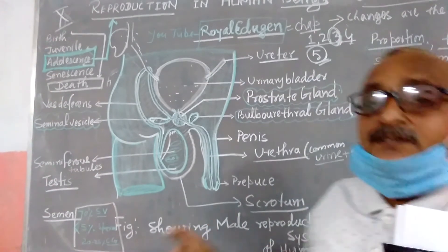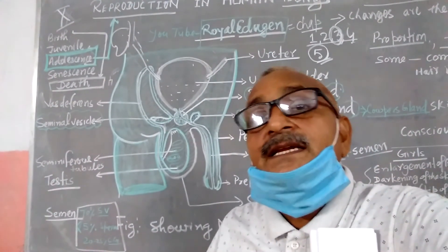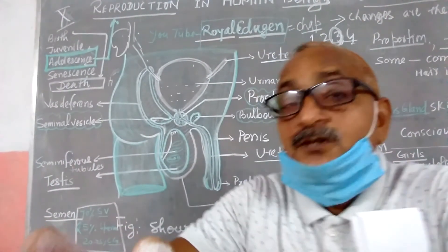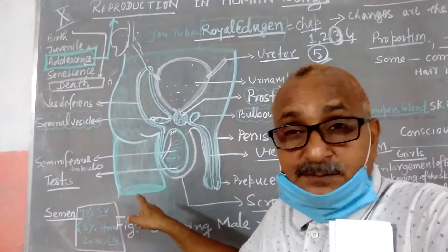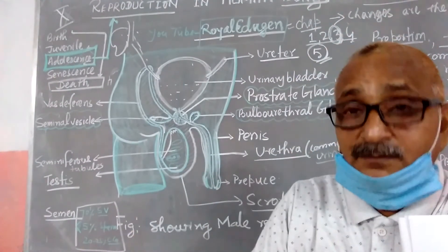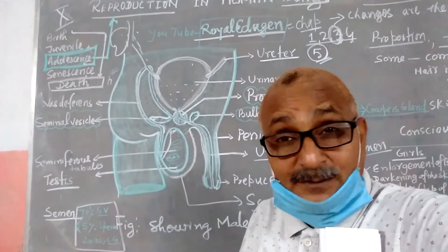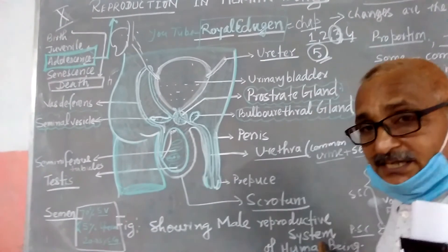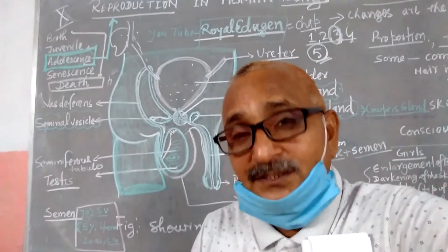The primary male reproductive organ is the testis which produces the two function of, two function of testis are there. One, it helping spermatogenesis in spermatogonia, the reduction division taking place, sperm mother cells undergoes reduction division to form sperm cell which mature into spermatozoa. And second, to release the testosterone hormones. So, testosterone hormone and formation of sperm, these are the two function of testis.